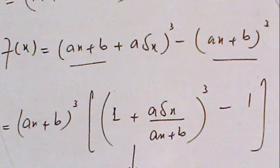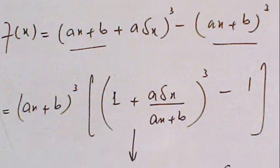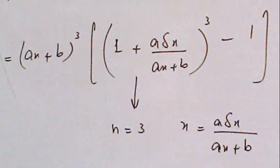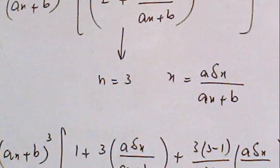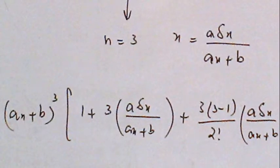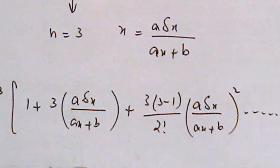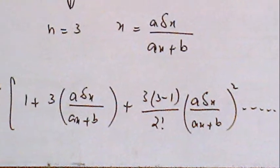Then we subtract these values using the same method. We combine (ax + b). First and last is 1, and we apply binomial theorem with n = 3 and x = aδx/(ax + b). The formula is 1 + nx + n(n-1)/2! x² ... at the end minus 1.